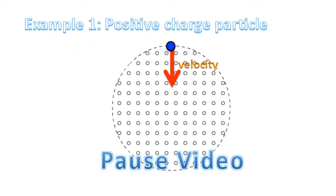Here's our first example. We have a particle that has a positive charge. It's heading in this direction. Please pause the video now.